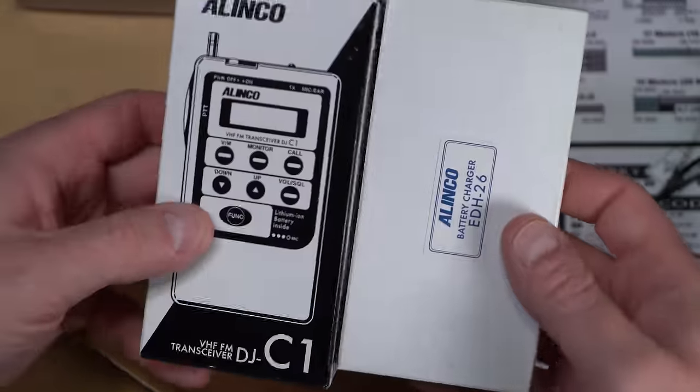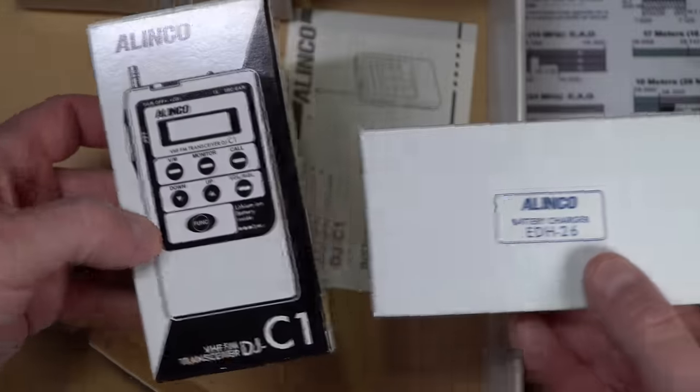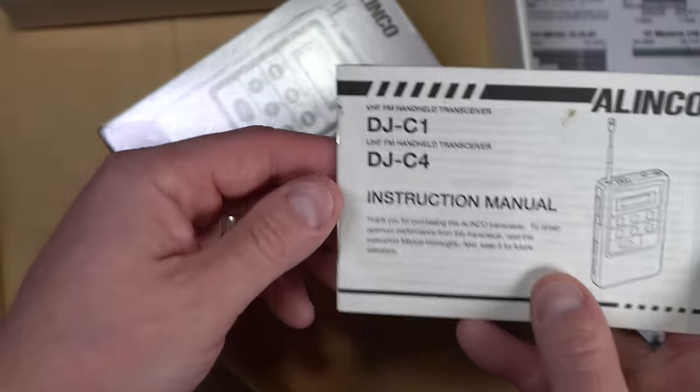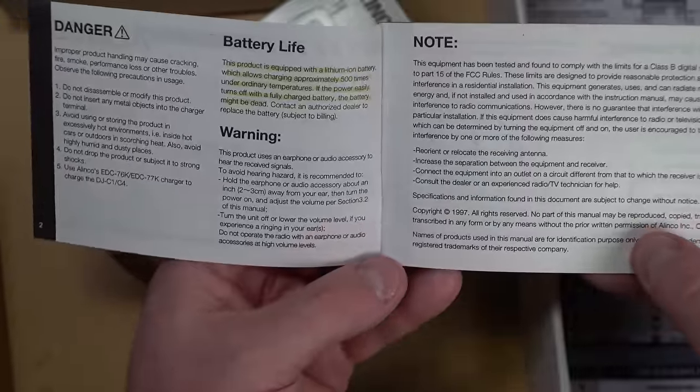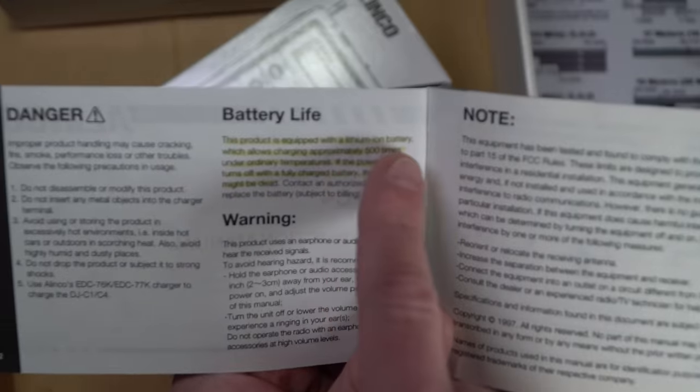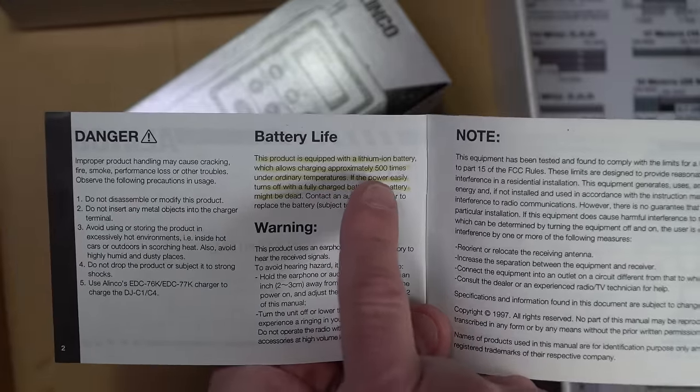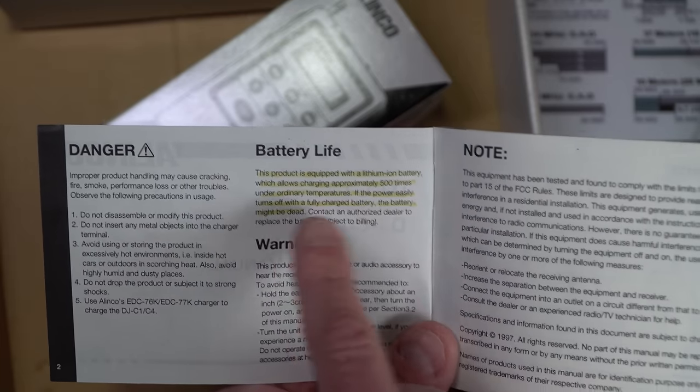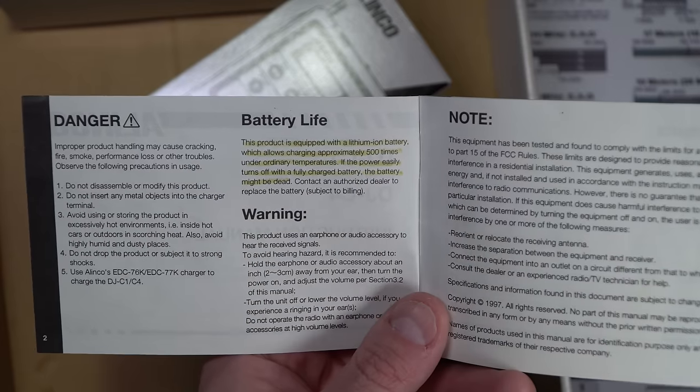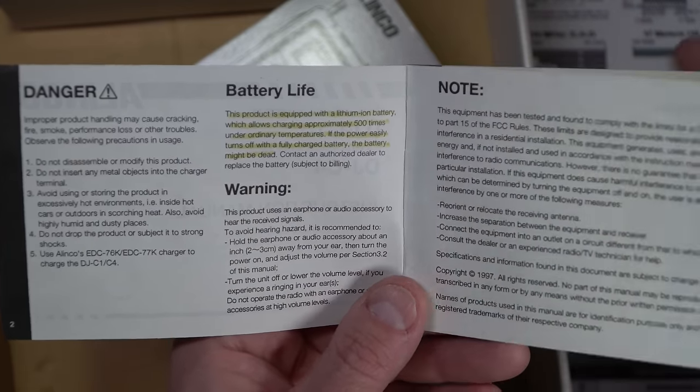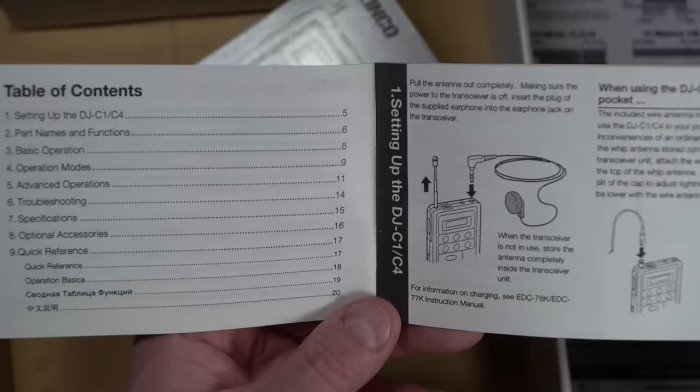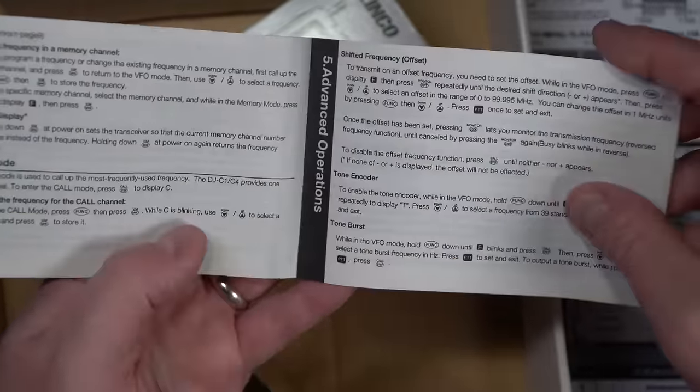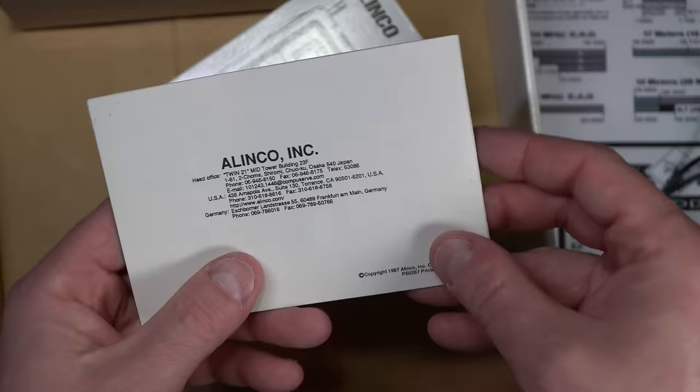The battery. See, look at this. Got a C1 box and a battery charger box. This is what will connect to the AC adapter. Let's check this for a date really fast. This product is equipped with a lithium ion battery, which allows charging approximately 500 times under ordinary temperatures. If the power easily turns off with a fully charged battery, the battery might be dead. That is something I noticed with these radios that they did not use the greatest batteries, but the good news is that you can easily swap them out.